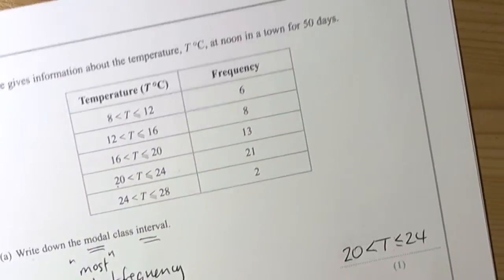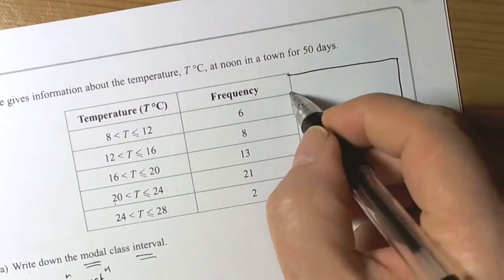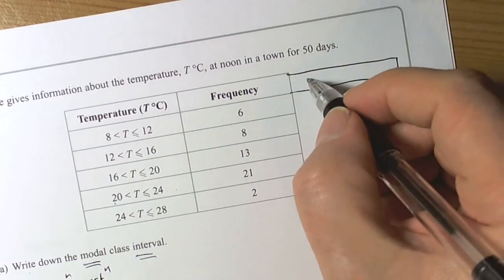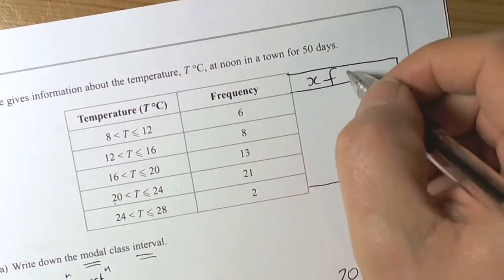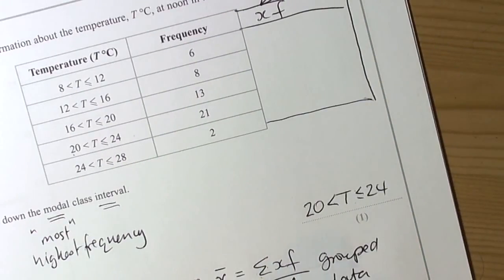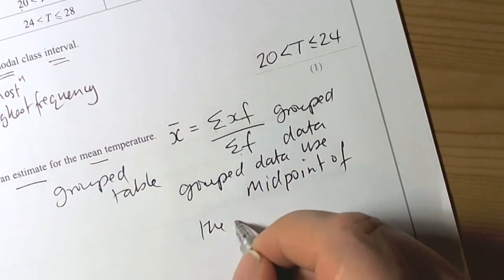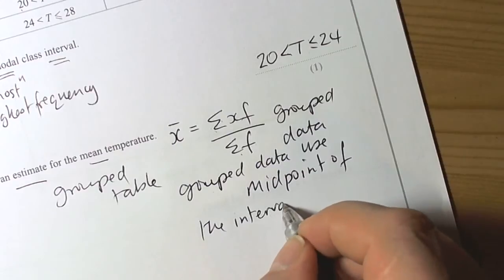And then we have the classic scenario of adding on the extra column, which is going to be the xf column. Now in this case, because it's grouped data, we need to use the midpoint. So because it's grouped data, we use the midpoint of the interval for x.